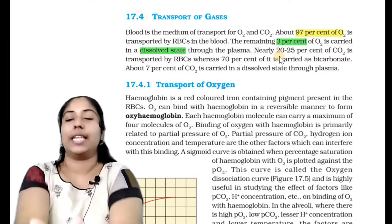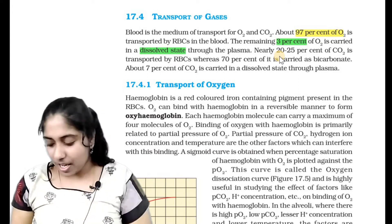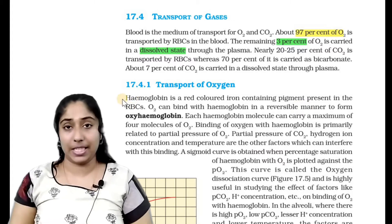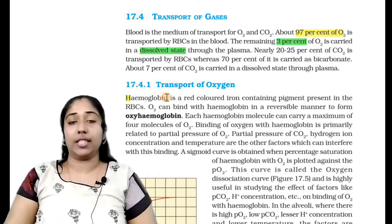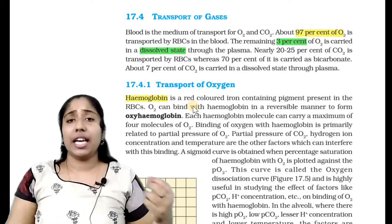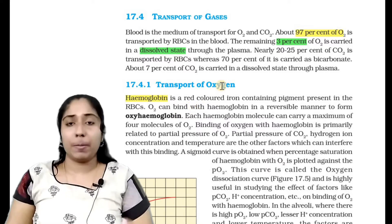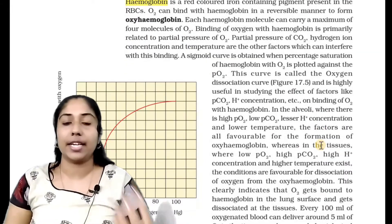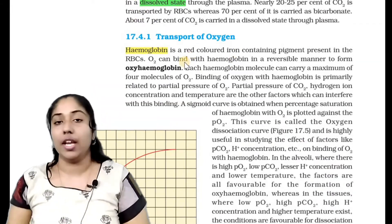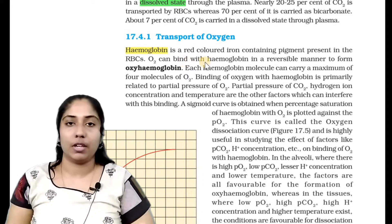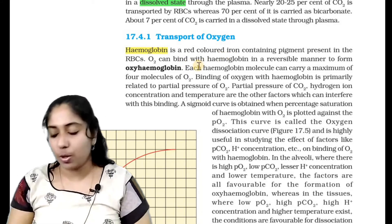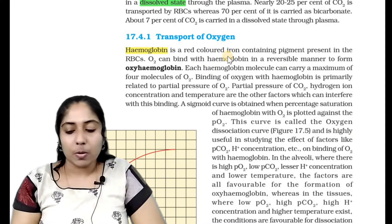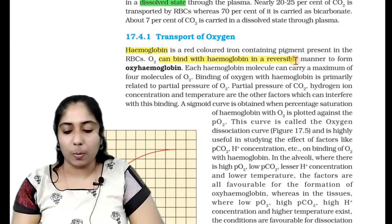First, transport of oxygen. Hemoglobin is a red-colored, iron-containing pigment present in RBCs. The red color in blood is due to hemoglobin. Hemoglobin is an iron-containing compound, and it is the molecule that carries oxygen.